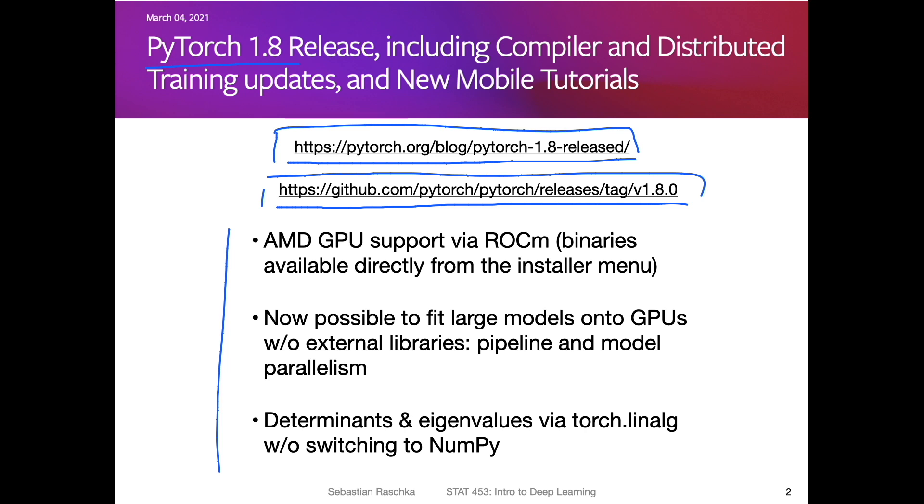One is that they now make it easier to use AMD GPUs. Competition is always good for business. It's good that also other cards other than Nvidia are supported, which I think is nice for people who have a gaming PC or something like that with an AMD graphics card. So now you can also use those graphics cards. This is supported by a library called ROCm - it's like CUDA but for AMD GPUs. There was support for AMD GPUs before, but it was a little bit of a hassle. You had to compile PyTorch yourself. And now what's new is that they are making the binaries directly available from the installer menu.